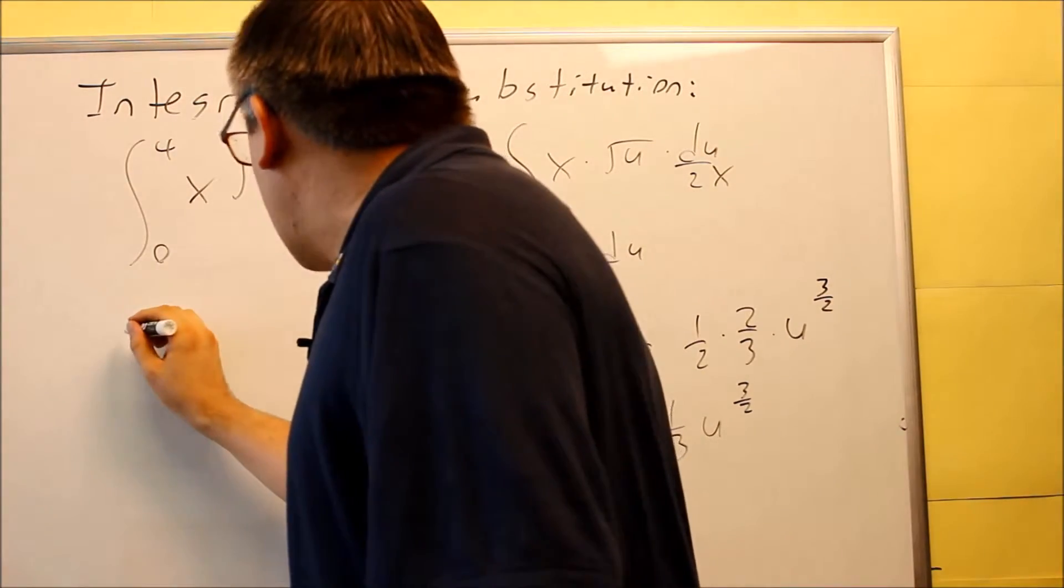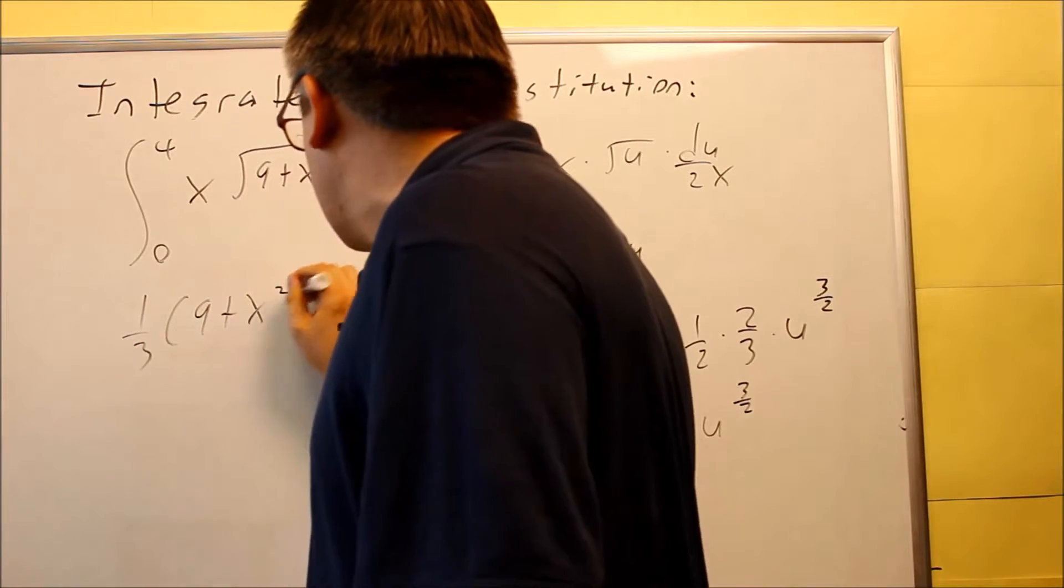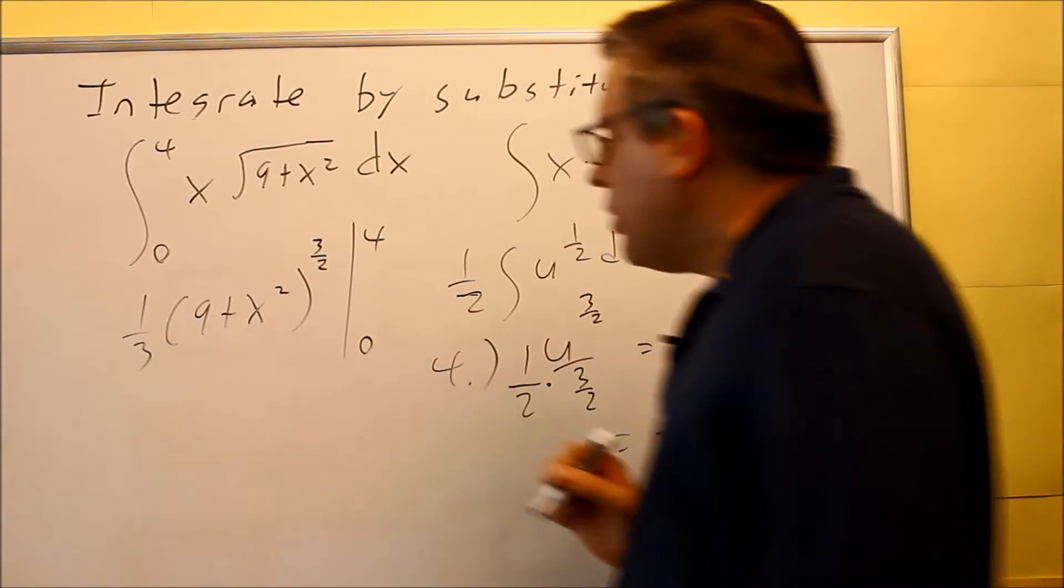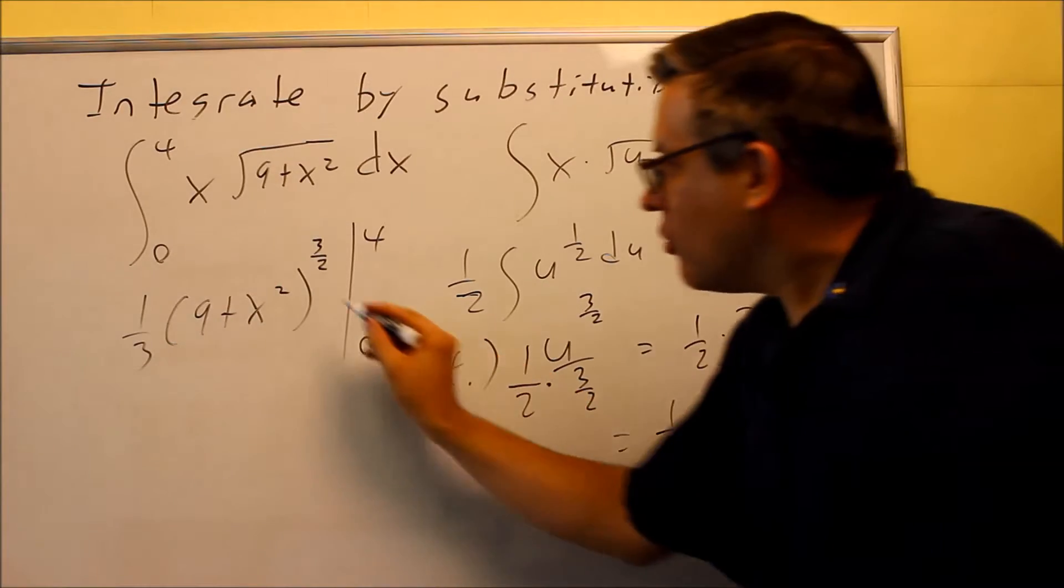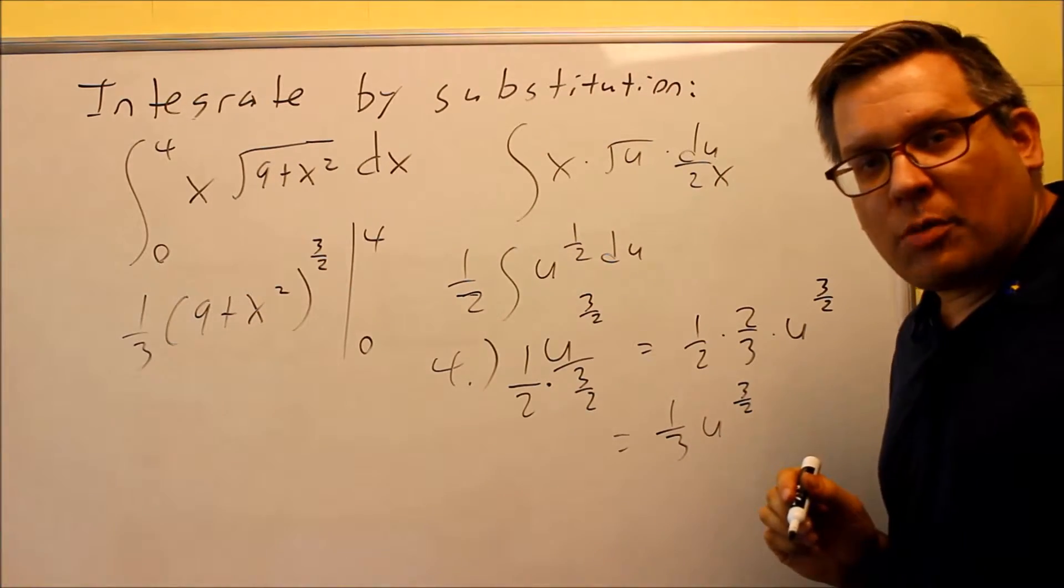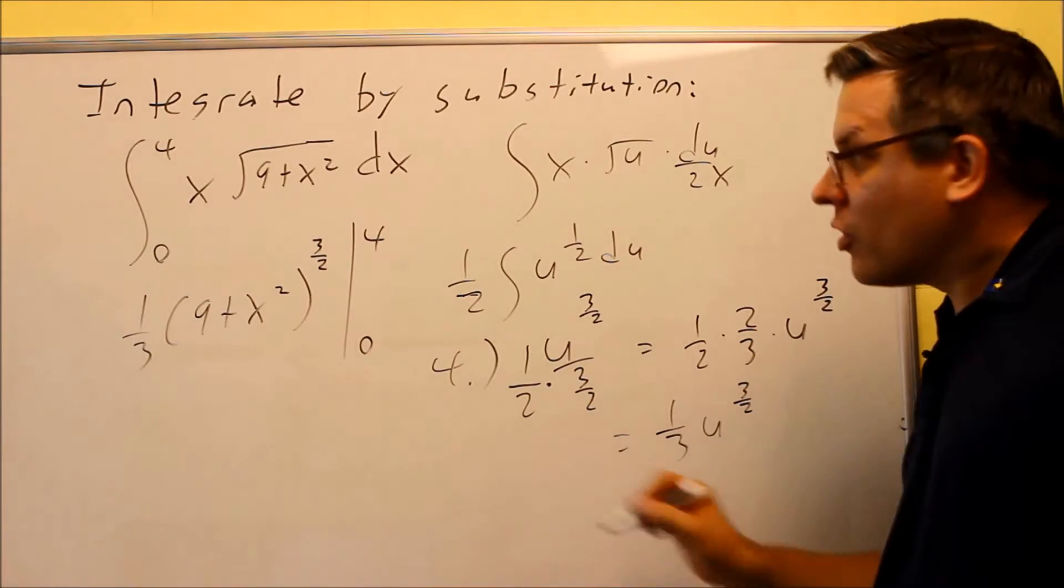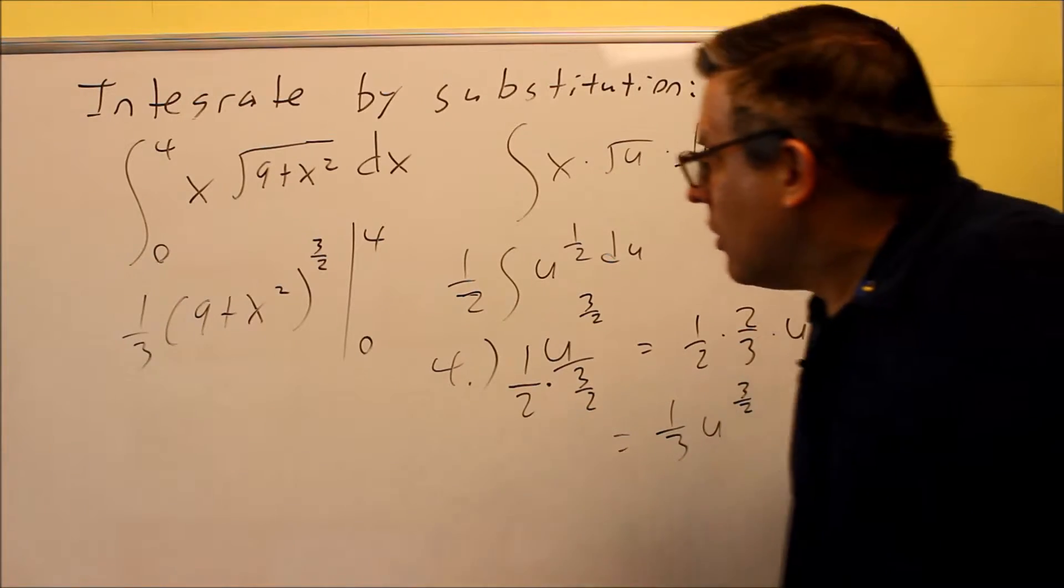So what happens is I have a one-third, I'm going to put 9 plus x squared back in, that's to the three-halves power, and then I'm going to be using my original zero and four. So again, if you put the u back into here, you want to use the original numbers that were given. If you're going to leave it with this expression here, you've got to convert the zero and four over into u's.